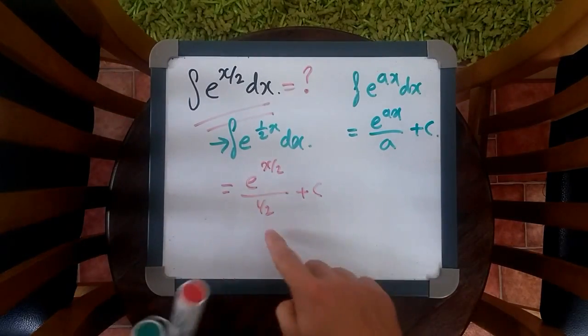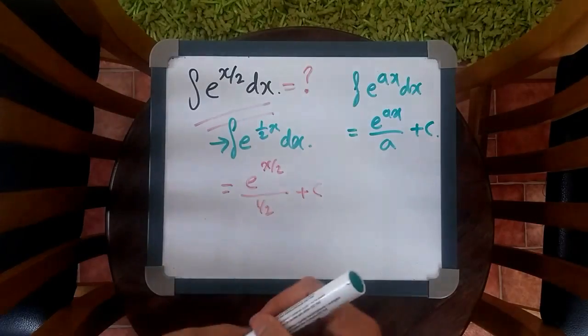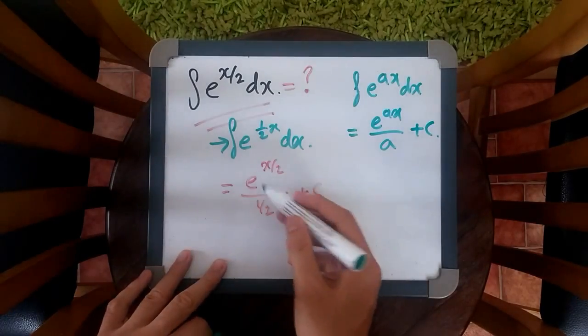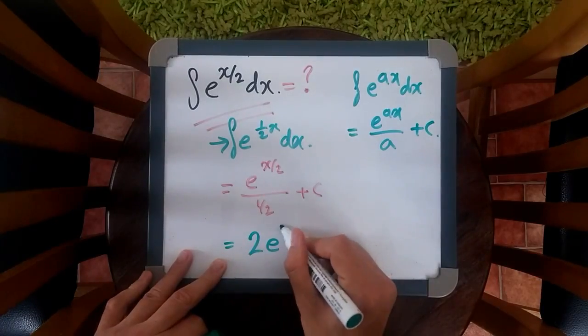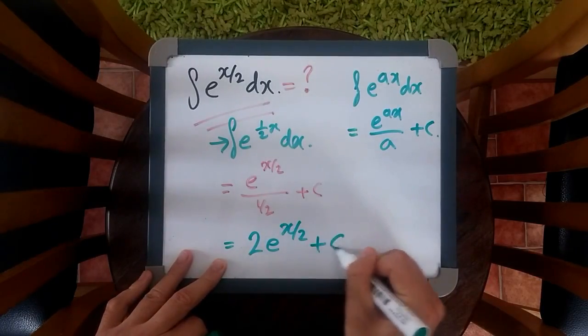And of course, this part, if you want to fix it up, you can put it to the top end. So this term divided by half, which is the same as times 2. So you get 2e to the power of x over 2 plus c.